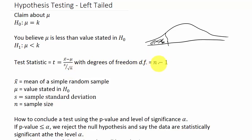We'll have to use this to look up our values in the student's t distribution table. x bar is the mean of a simple random sample, mu is the stated value in the null hypothesis H naught, s is the sample standard deviation, and n is the sample size.